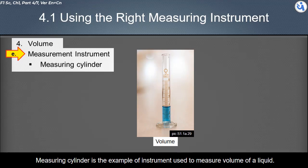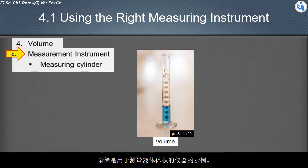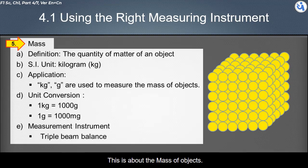One cubic centimeter is equal to one milliliter. One liter is equal to one million cubic centimeters, or one million milliliters. Measuring cylinder is the example of instrument used to measure volume of a liquid.